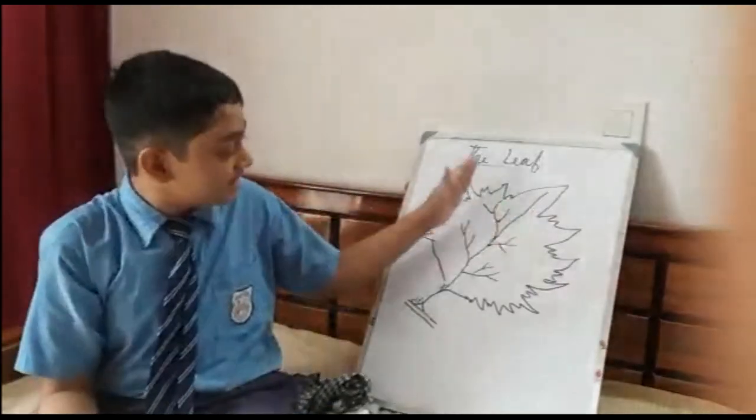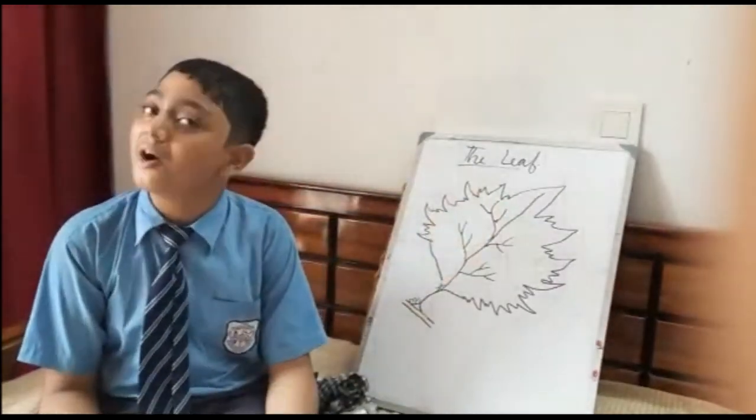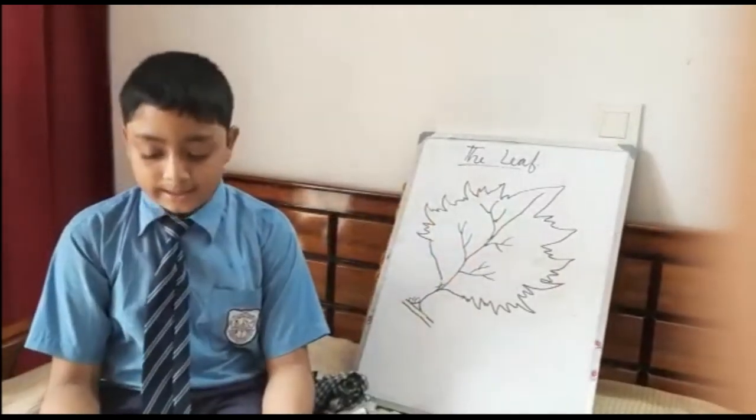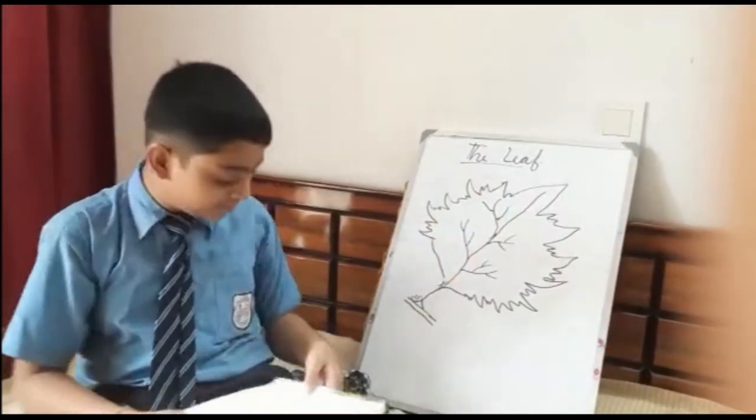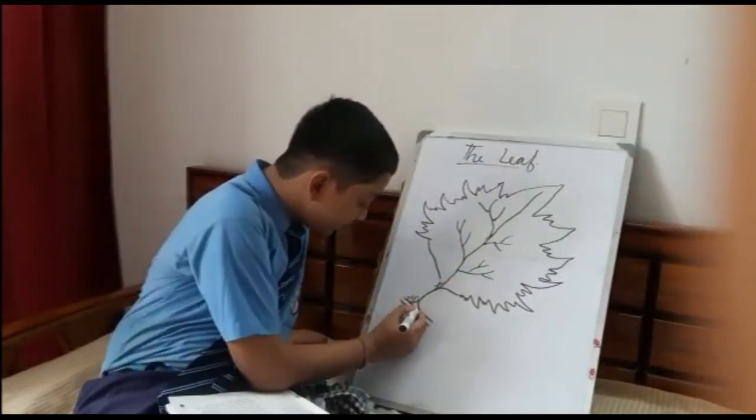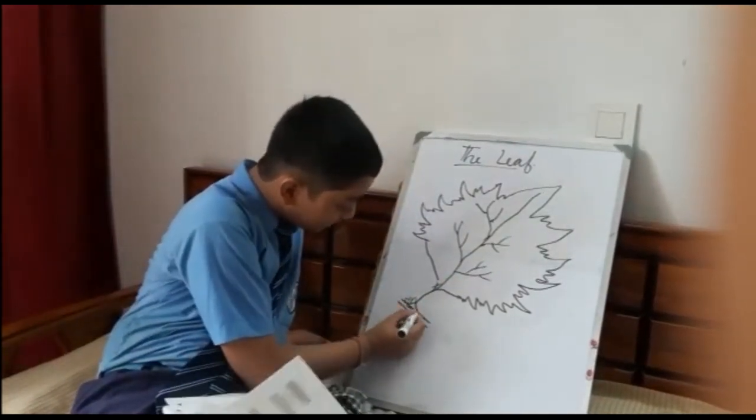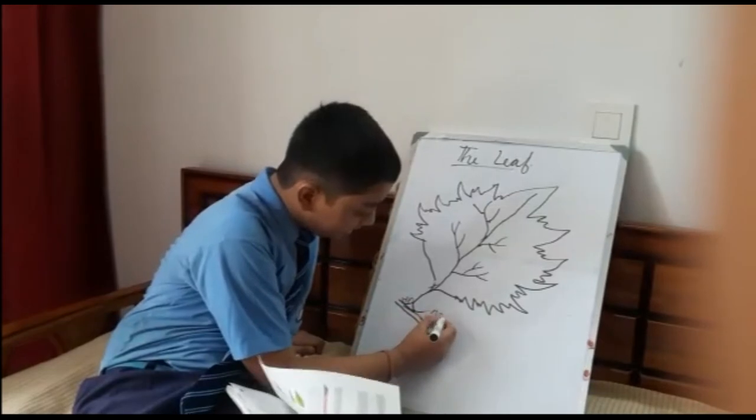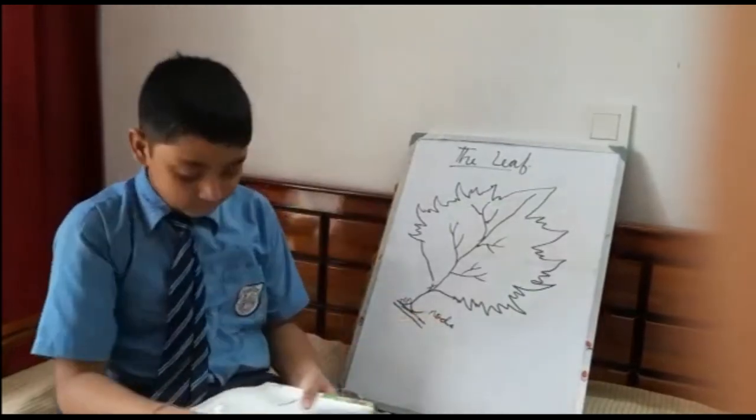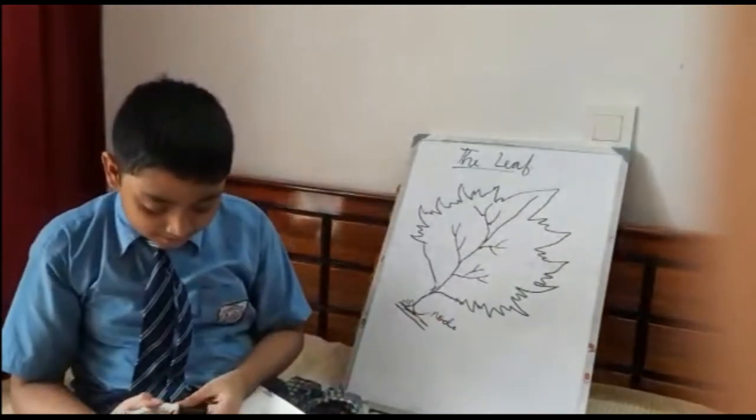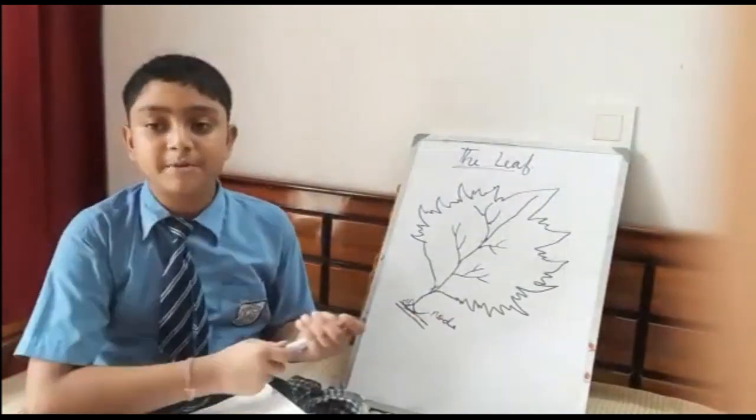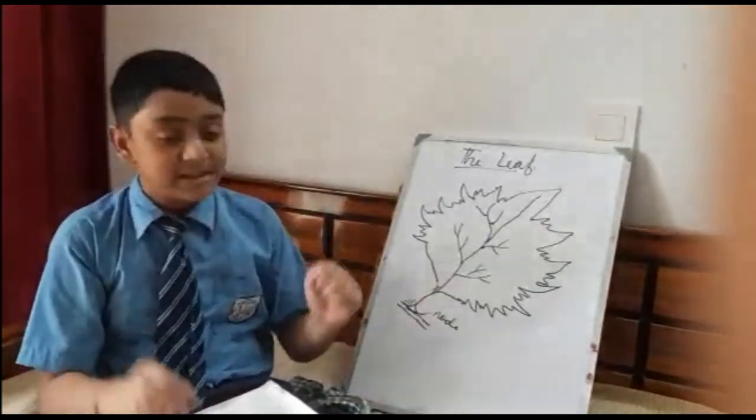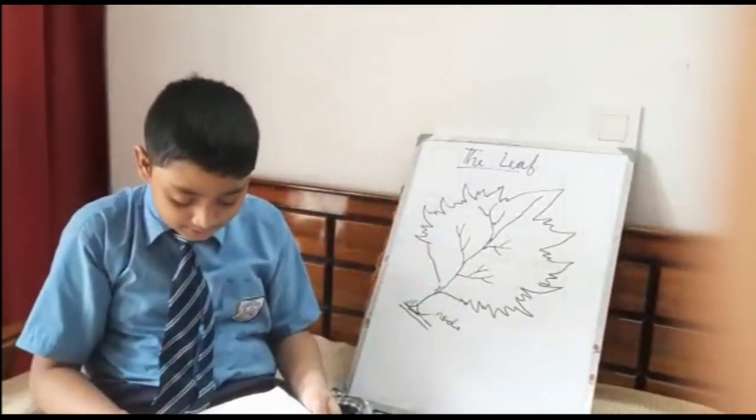The point on the stem from where a leaf arises is called the node. You see that the leaf is attached to the stem and this point is called the node. A leaf develops from the node, means a leaf grows from the node.